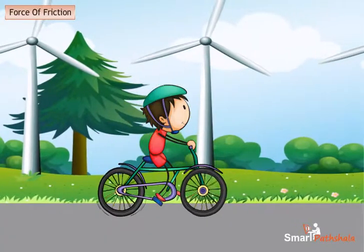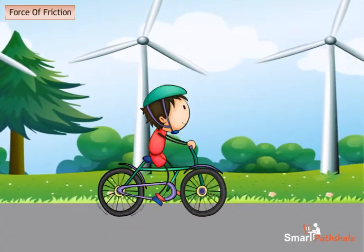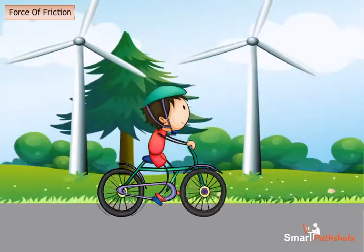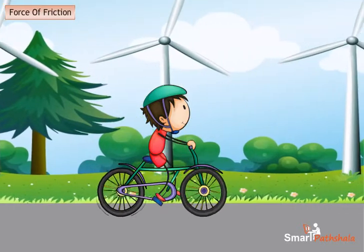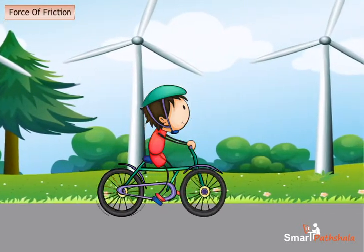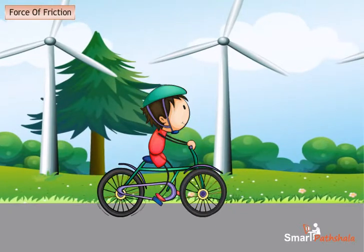You could not ride your bicycle if there is no friction between the surface of the tires and the street, and the bicycle can be stopped by applying brakes due to the friction between the brakes and the tires.